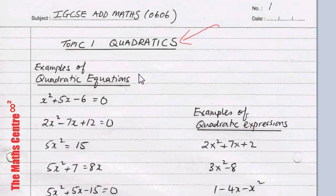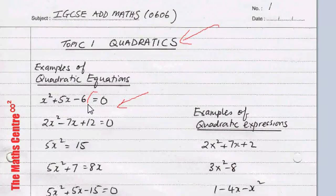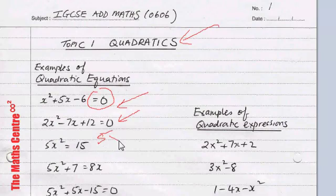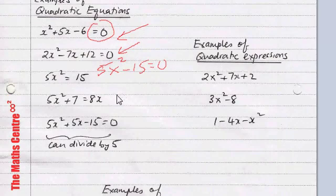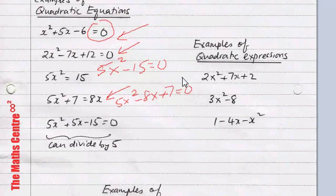Let's look at quadratic equations. We will have x squared plus 5x minus 6 equals to 0. When you see equations, you will see equal to 0. Either you will see things like equal to 0, or you will see things like 5x squared equals to 15, where you can rewrite this as 5x squared minus 15 equals to 0. Quadratic equations can be expressed as something equals to 0.